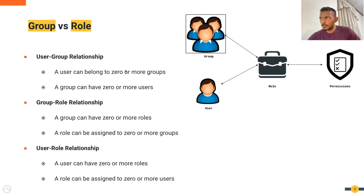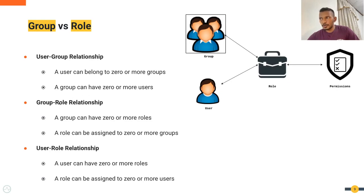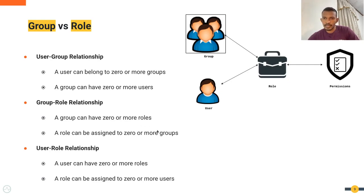Let's see the relationship between groups, roles, and users. A user can belong to zero, one, or more groups, and a group can have zero, one, or multiple users. When it comes to the group-role relationship, a group can have zero, one, or multiple roles, and a role can be assigned to zero, one, or multiple groups. Similarly, in the user-role relationship, a user can have zero, one, or multiple roles, and a role can be assigned to zero, one, or multiple users.